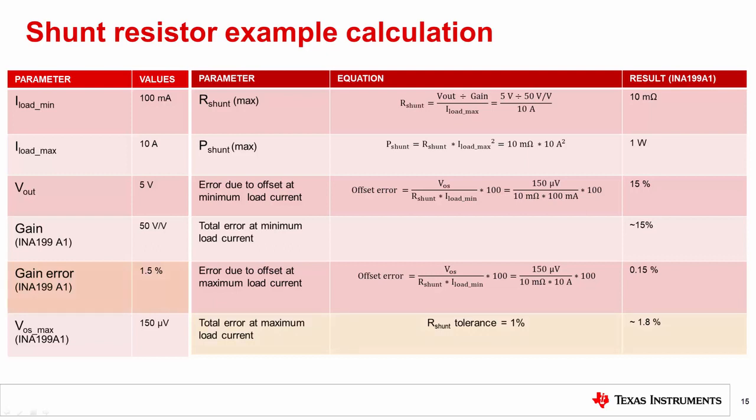Therefore, choosing a resistor with 1% tolerance and given the 1.5% maximum gain error of INA199A1, the total error at full-scale is around 1.8%. Total error is calculated by adding error sources as the root sum of squares, which is discussed in detail in other videos in this series. If the chosen shunt resistor has a tolerance greater than 1.5%, then the tolerance will dominate full-scale error in this case.